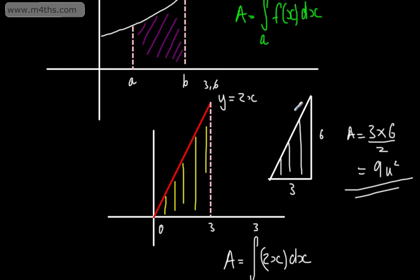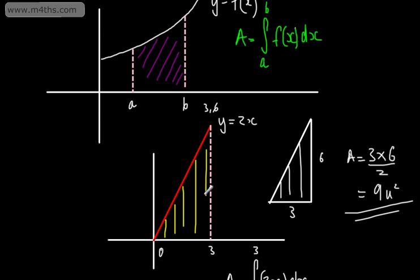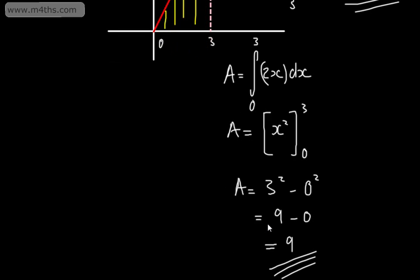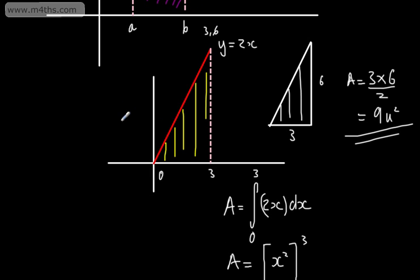Hopefully that gives you a nice example from something we would know. It's quite counter-intuitive to think that we can just find an area trapped under a curve by plugging in. But hopefully, seeing shapes such as a triangle gives you a nice example of how we can use integration to find it. It's not a proof, it's just an example of something familiar. So what we're going to do is work through a few examples. If we can sketch it, it makes things slightly easier.